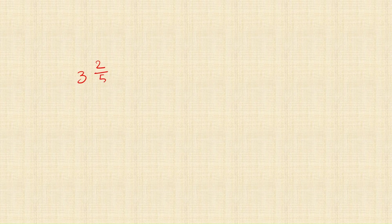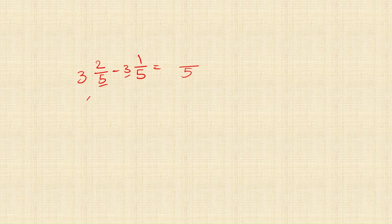For subtraction: 3 and 2 upon 5 minus 3 and 1 upon 5. First subtract the whole number parts: 3 minus 3 is 0, so nothing is written in the whole number portion. Then subtract 2 upon 5 minus 1 upon 5. Denominators are the same, so directly subtract numerators: 2 minus 1 is 1. The answer is 1 upon 5.